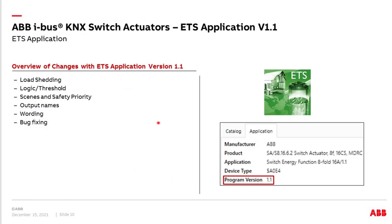Now let's look at the news in ETS Application Version 1.1. What did we do? Load shedding has been completed. In logic — threshold belongs to the logic functions — we have also added or changed something. Scenes and safety priority are different in parameterization. So-called output names can now be given. Additionally, the wording has been adapted — maybe the wording is a bit different compared with Version 1.0, but in functions they are not different. And of course, as always, some bug fixing has been done.